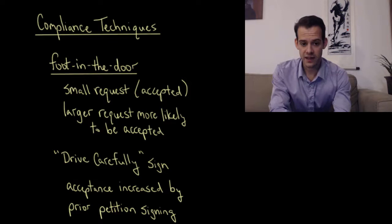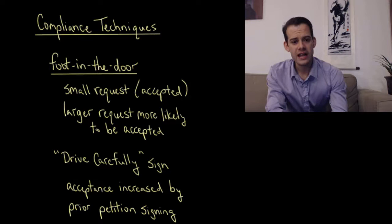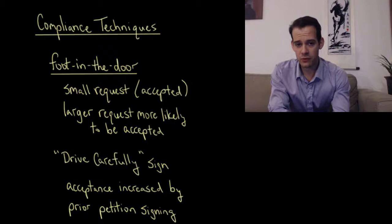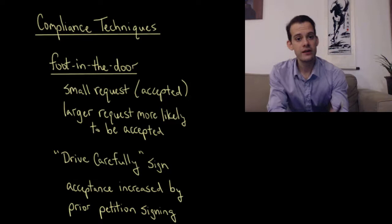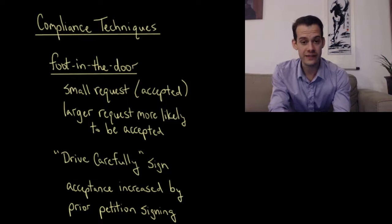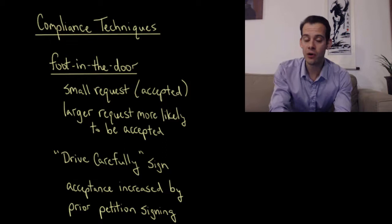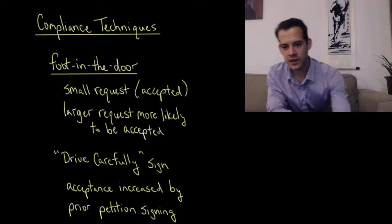This was demonstrated in a classic study in the 1960s by Friedman and Fraser where they asked people to put this ugly 'drive carefully' sign in front of their house and they found that most people didn't really want to do this. But they were able to increase the acceptance of this request if they previously asked people to sign a petition that they support safe driving. So somebody comes to your house and says will you sign this petition saying that you support safe driving and you agree - that's a very small harmless request - and then when they come back with this drive carefully sign you're more likely to accept than if they had just started with the drive carefully sign.